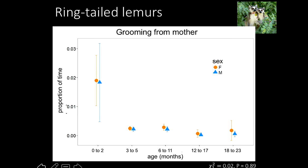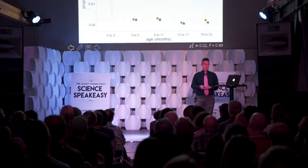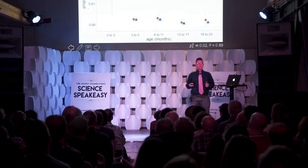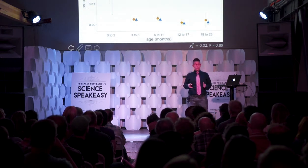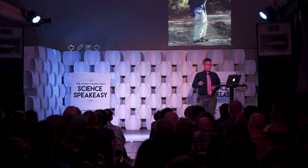But this has been investigated in many, many studies on many species, and most of the time we find no differences at all in how moms treat their kids by sex. I also looked at this in lemurs — here are data from ring-tailed lemurs showing how much grooming sons and daughters receive from their mothers from birth to about two years old. There's no sex difference at any age. Moms groom their sons and daughters identically across the age range. This pattern of no difference is much more common than finding a sex difference.